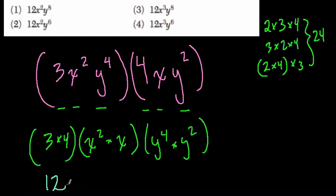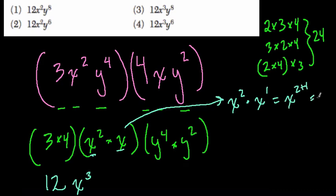Here, 3 times 4 is 12. x squared times x, so that's x to the third. Why? Well, think about it. Law of exponents, we have x squared times x to the first. You add the exponents. That's x to the third.